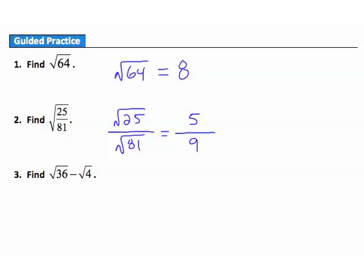Question 3: find the result of the square root of 36 minus the square root of 4. Remember, square roots get evaluated during the exponent stage, before the subtraction. So the square root of 36 is 6, the square root of 4 is 2, and then 6 minus 2 gives an answer of 4.